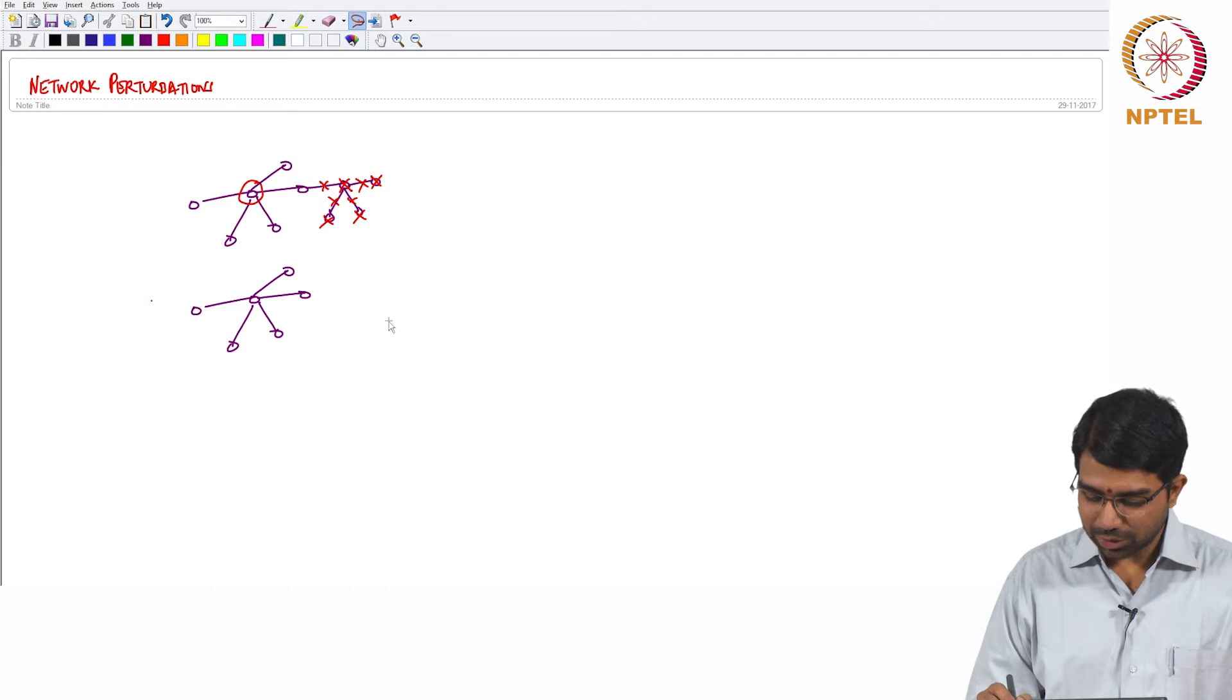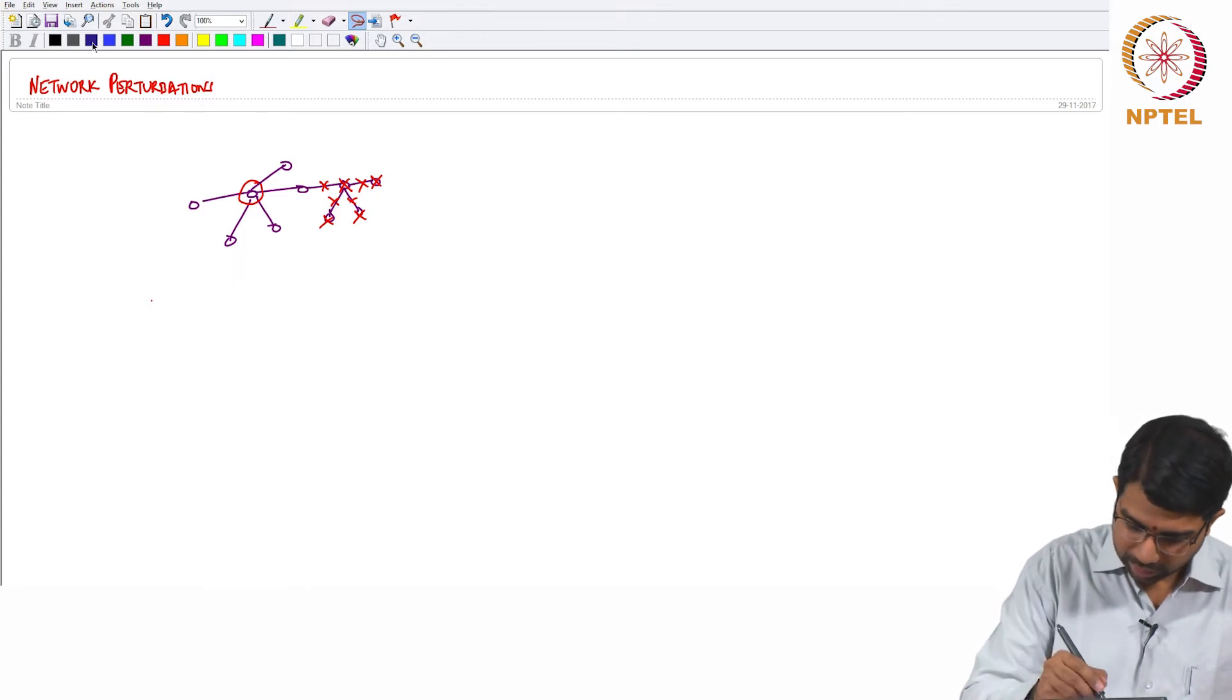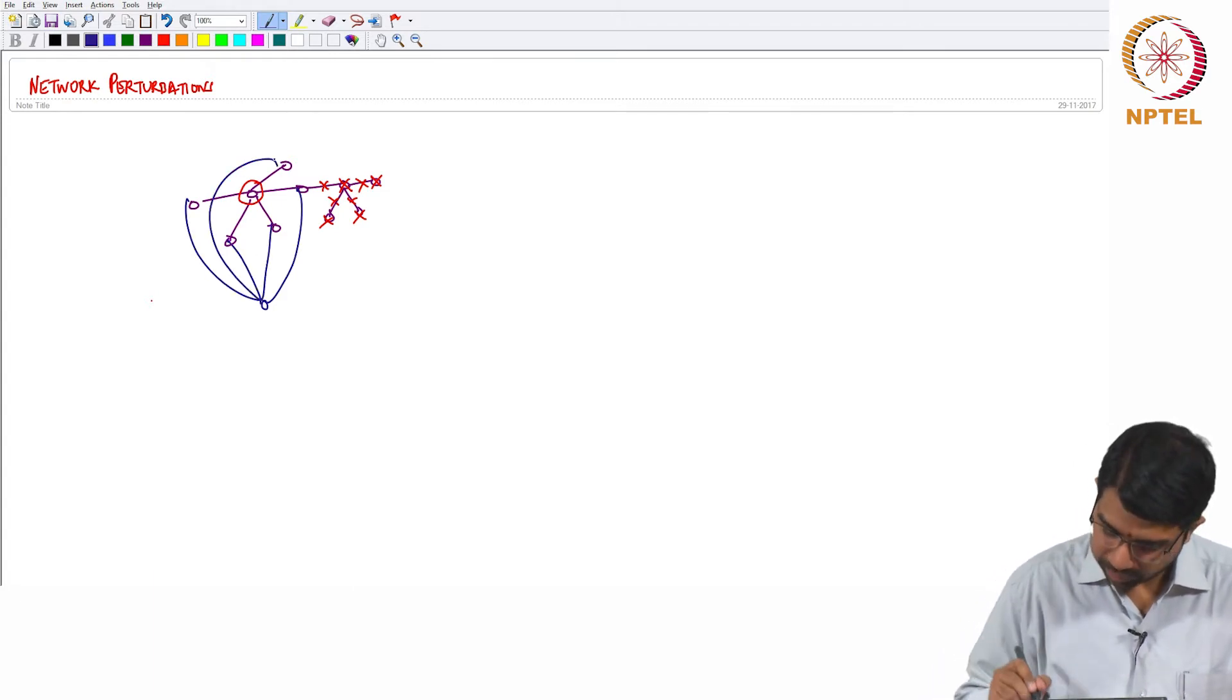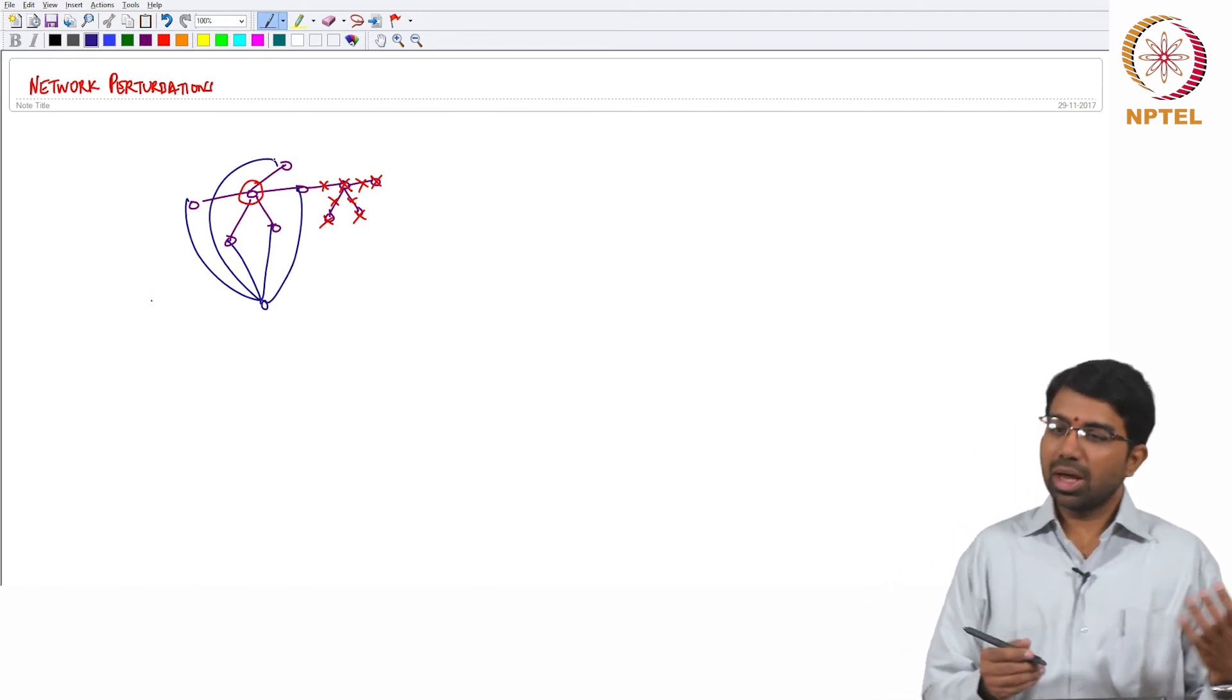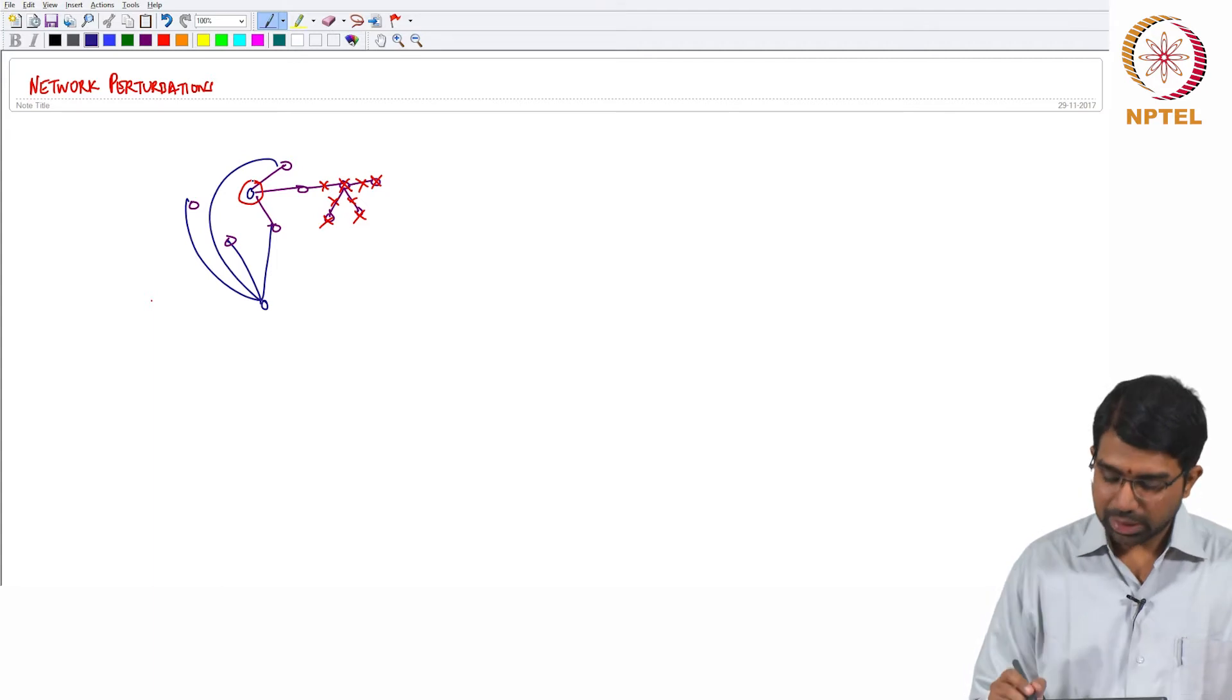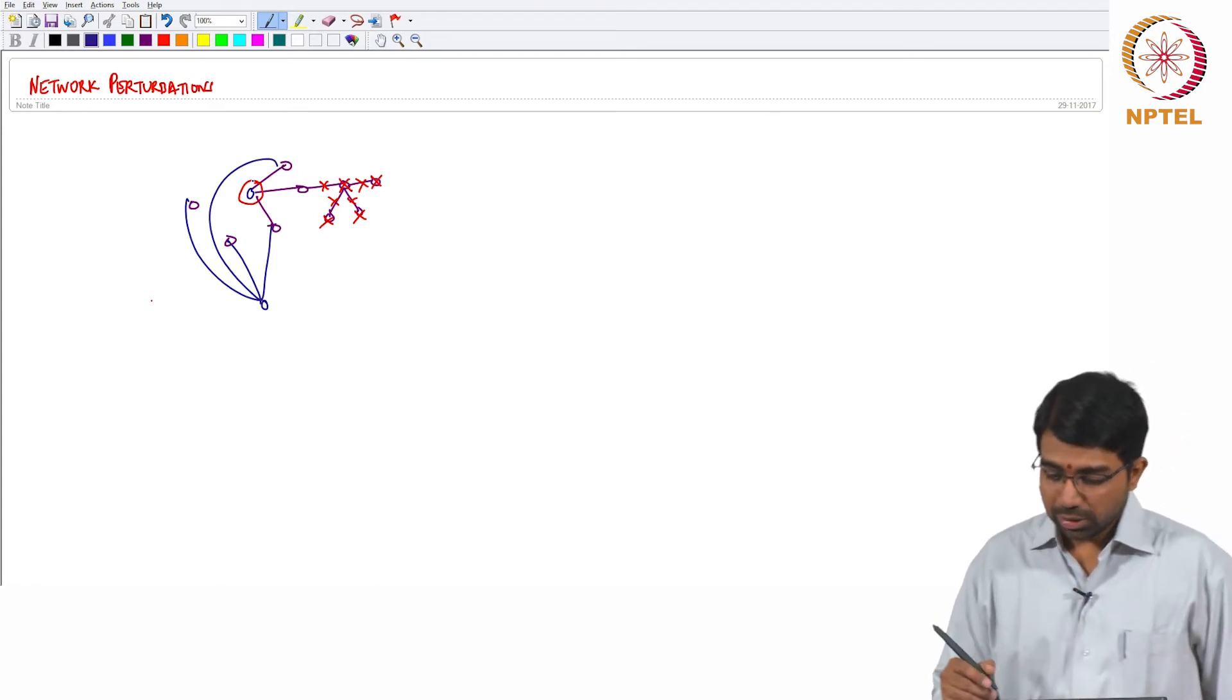It will basically interact with most of the previous partners. So you basically have now duplicated that node but it's going to interact with all the previous nodes. Because it is just a duplicate, it's very likely to interact with that. But then in future other interesting things can happen. Maybe there is no selection pressure on this edge, so it can go away, maybe this edge could go away, this edge could go away. And your resulting network could be very different from what you started off with.